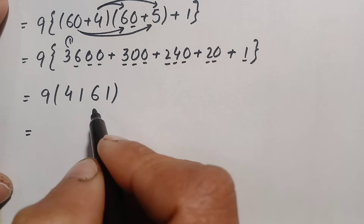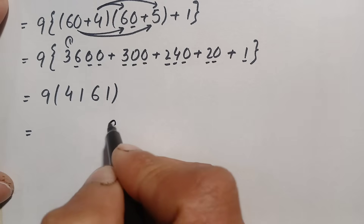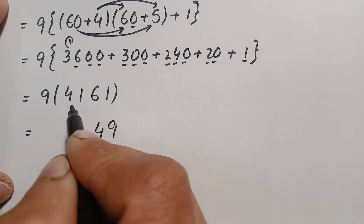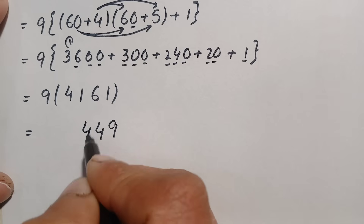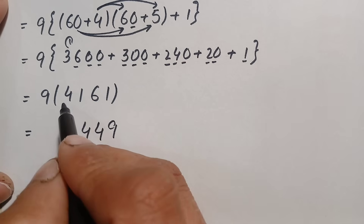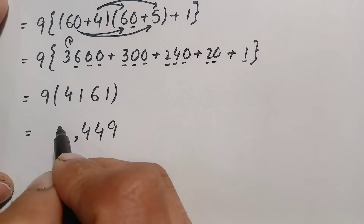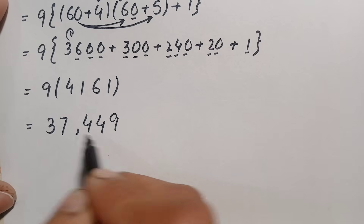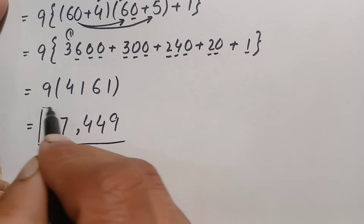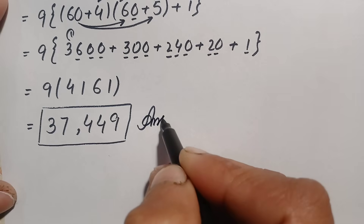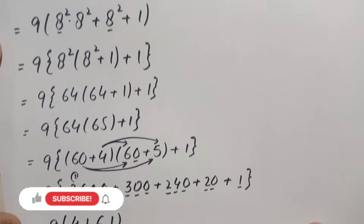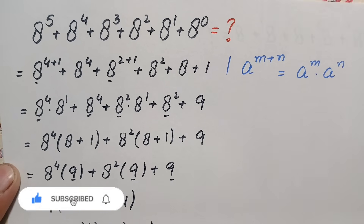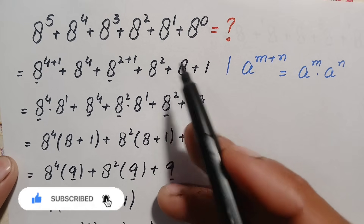Finally, we multiply 9 by 4161. Starting from the ones: 9 times 1 is 9. 9 times 6 is 54, write 4 carry 5. 9 times 1 is 9, plus 5 carried is 14, write 4 carry 1. 9 times 4 is 36, plus 1 carried is 37. So this gives 37449. Therefore, 37449 is our final answer and value of this beautiful exponential simplification math problem.